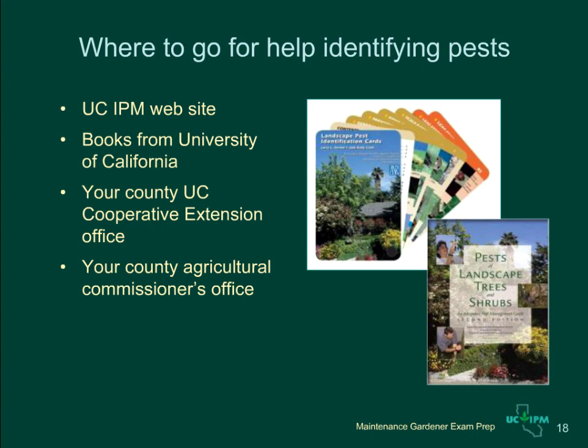Hundreds of different pests may occur in the landscapes you manage, and you can't be expected to recognize all of them. Several resources from the University of California will help you identify pests, including the Landscape Pest Identification Cards and the book Pests of Landscape Trees and Shrubs. You can also get expert help from your County Cooperative Extension Office or your County Agricultural Commissioner's Office. The Agricultural Commissioner's Office will send samples of any exotic or unusual pests to the California Department of Food and Agriculture Pest Identification Lab for identification.